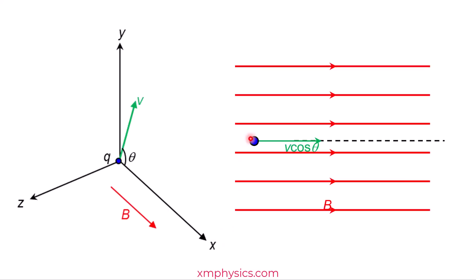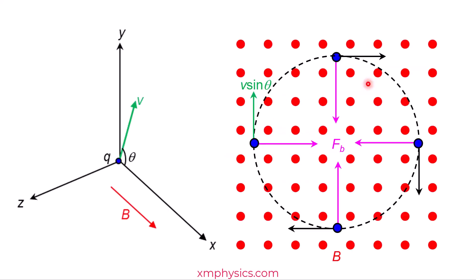But the fact is that we have both V sine theta and V cosine theta at the same time. Now notice that the circular motion is independent from the forward straight line motion because the magnetic force will never have any components in the X direction. So your V cosine theta will remain constant throughout.